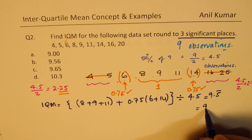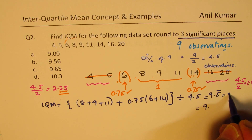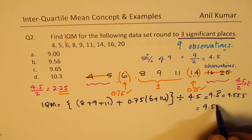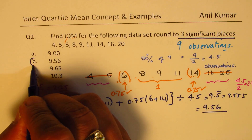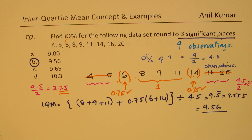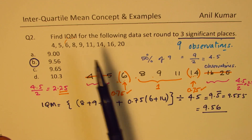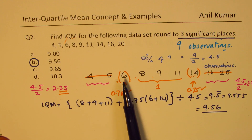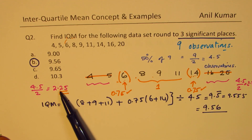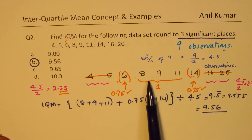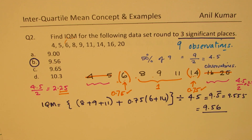Rounding 9.5555... to three significant places gives 9.56. So option B is the correct answer. The key takeaway: when the data count is not a multiple of four, we treat boundary terms partially — 0.25 is excluded, 0.75 is considered — and take full observations for the middle terms. Total weight is 4.5.